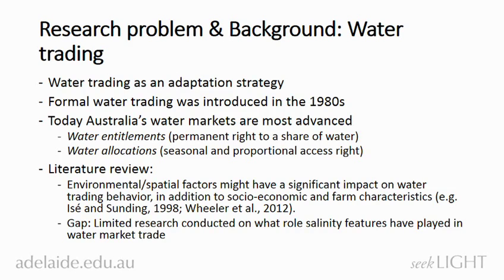The literature on water trading behavior suggests that the decision to trade water is majorly determined by socioeconomic and farm characteristics such as age, income, education, and land use. What is unknown so far is how various types of salinity have influenced the adoption of water trading over time in the Murray-Darling Basin.